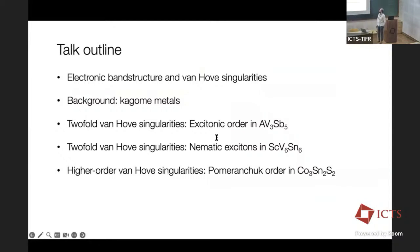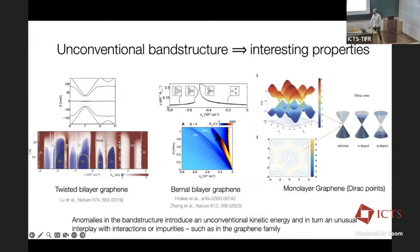The outline of my talk: first, I'm going to talk abstractly about electronic band structure and Van Hove singularities, then about Kagome metals specifically, and then I'm going to try to talk about three instances of Van Hove singularities playing an important role in these materials — first in the 135 materials, then in the 166, and lastly in the surface states of the Weyl semimetal cobalt tin sulfur.